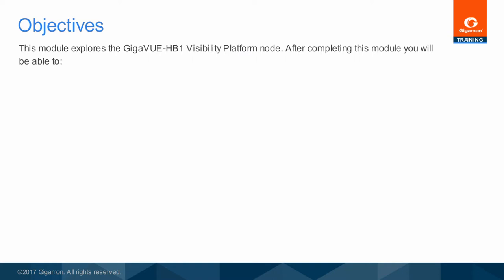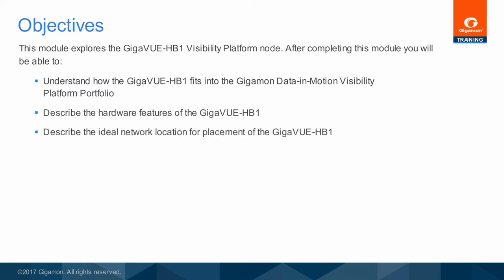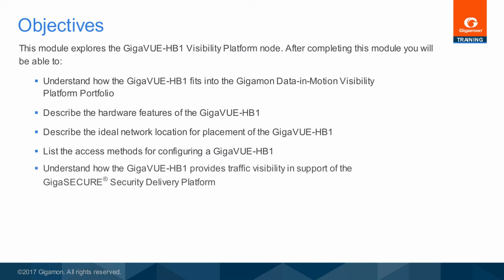After completing this module, you will be able to understand how the Gigaview HB1 fits into the Gigamon Data in Motion Visibility Platform portfolio, describe the hardware features of the Gigaview HB1, describe the ideal network location for placement of the Gigaview HB1, list the access methods for configuring a Gigaview HB1, and understand how the Gigaview HB1 provides traffic visibility in support of the Gigasecure Security Delivery Platform.